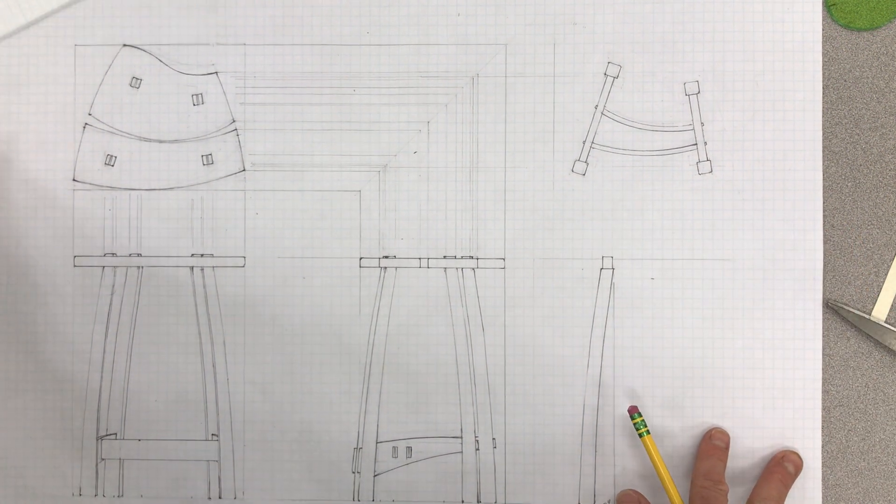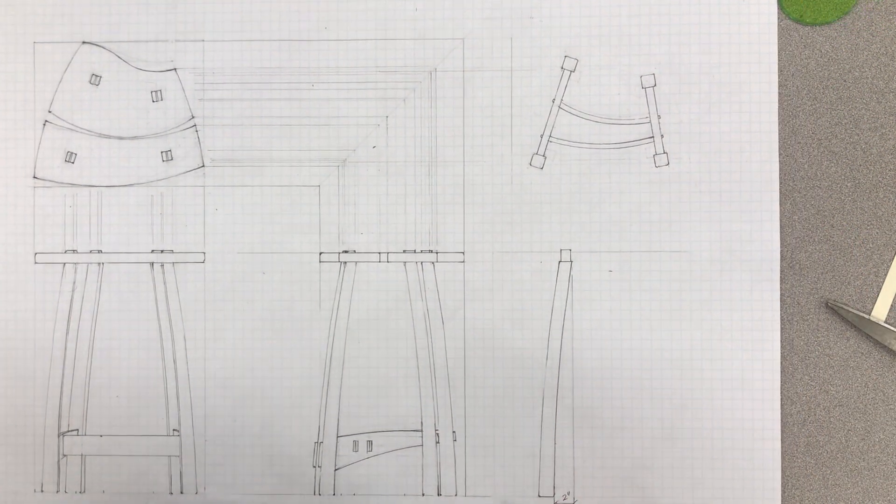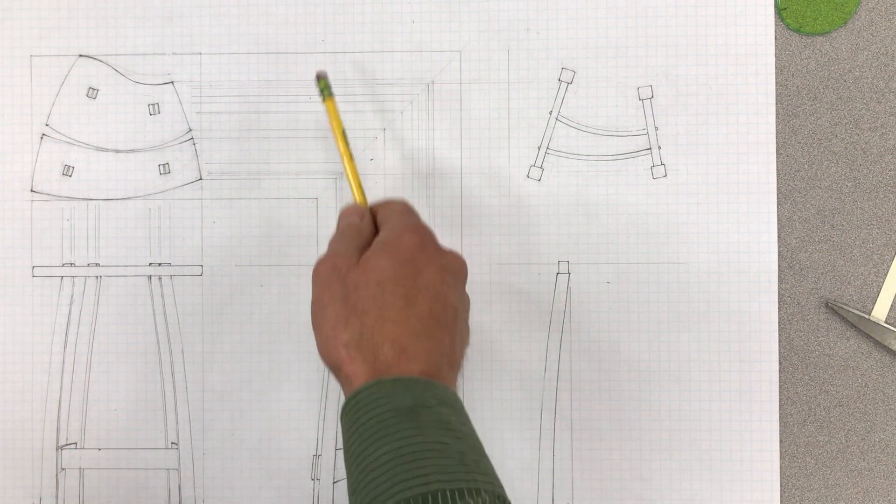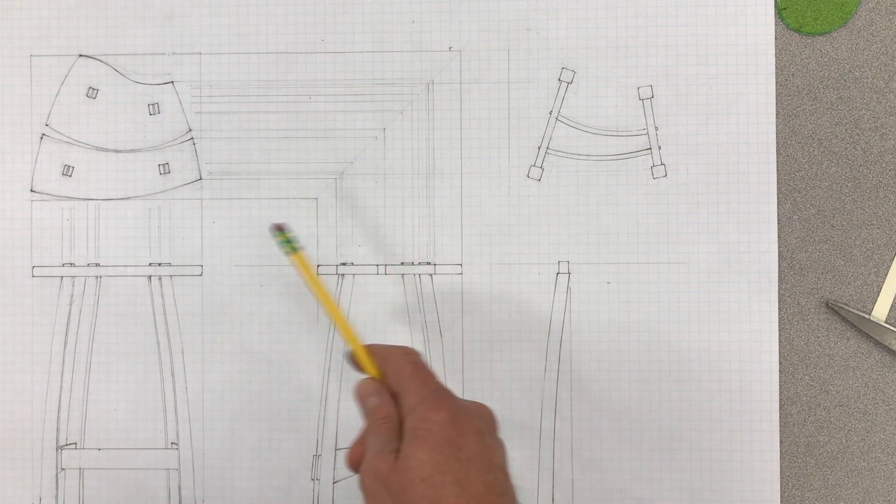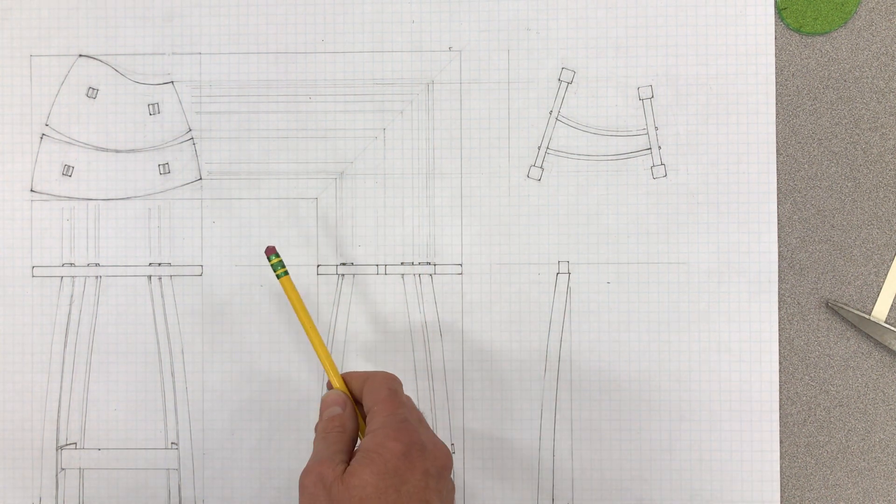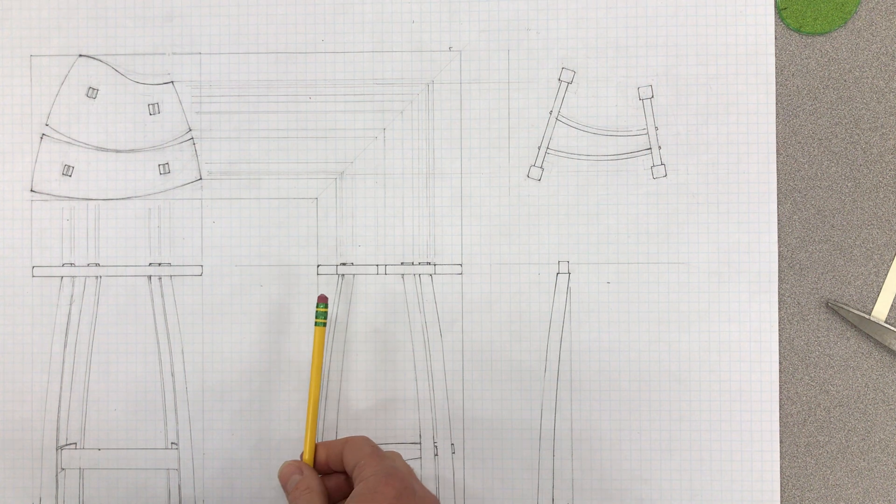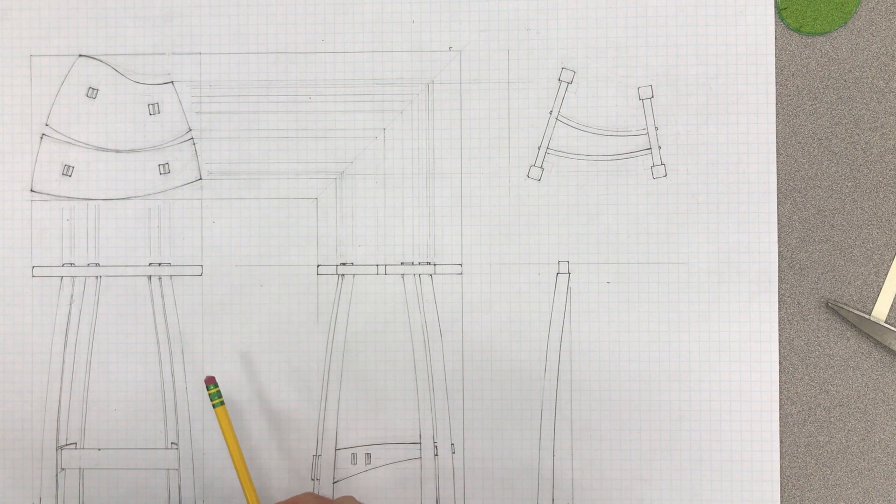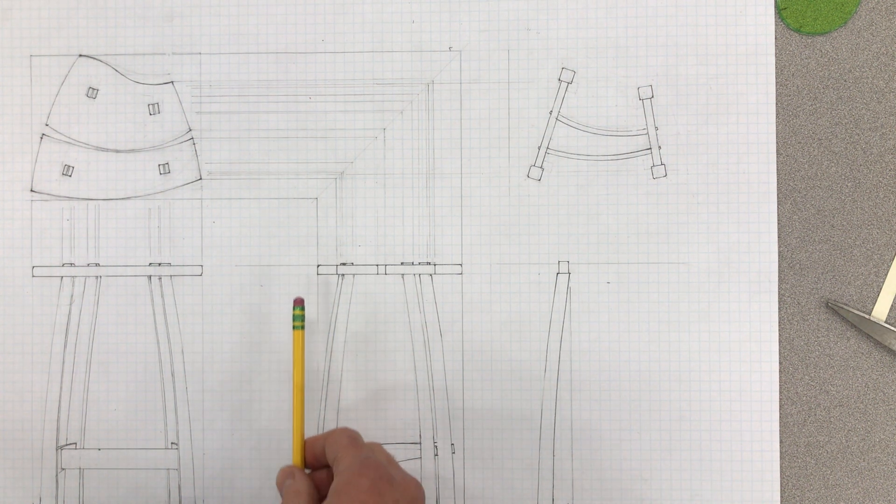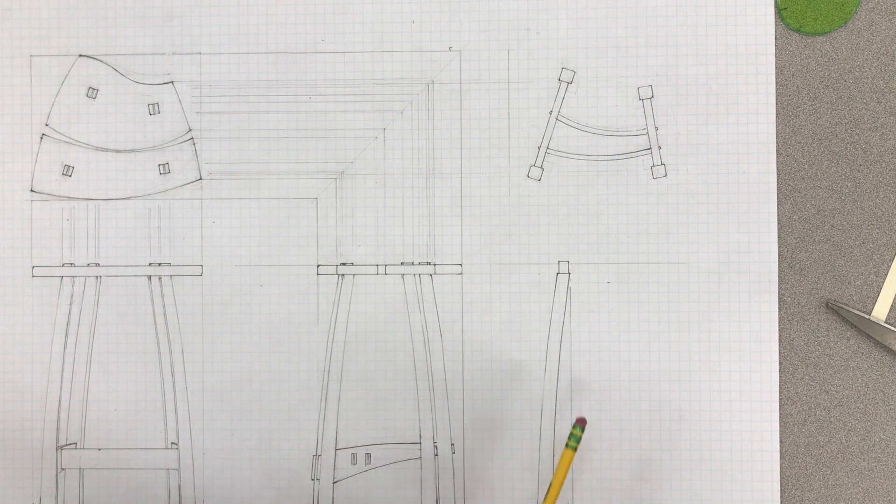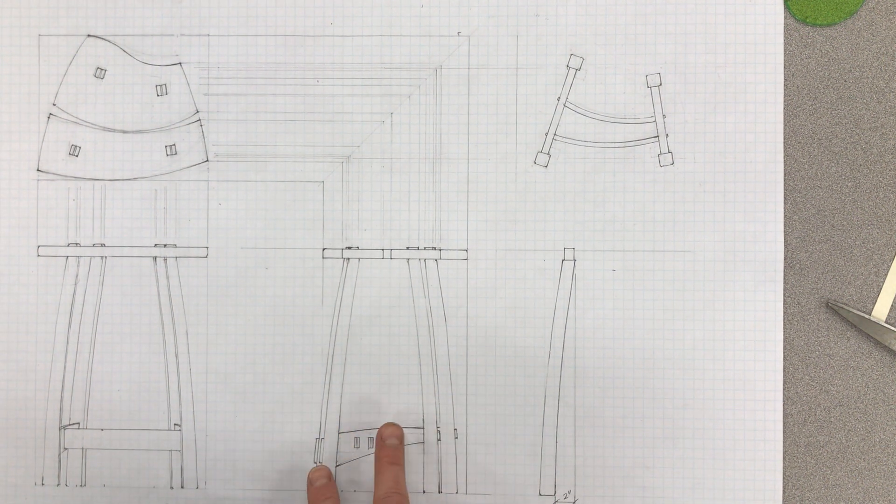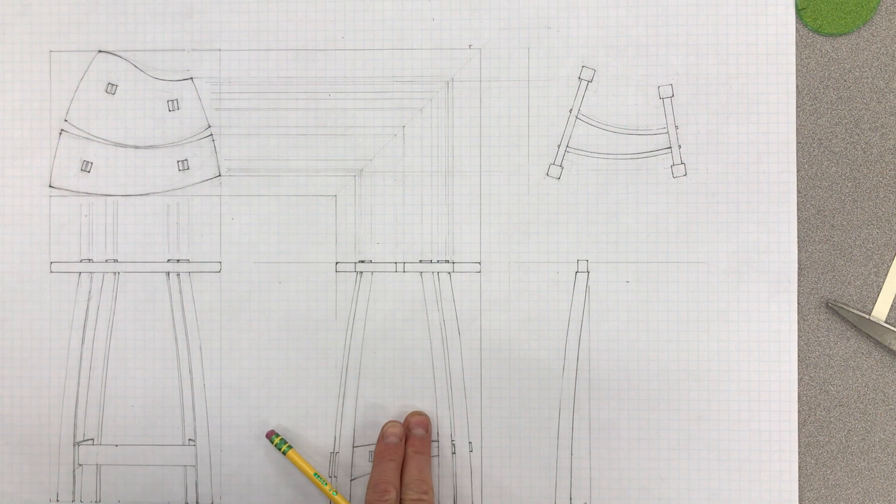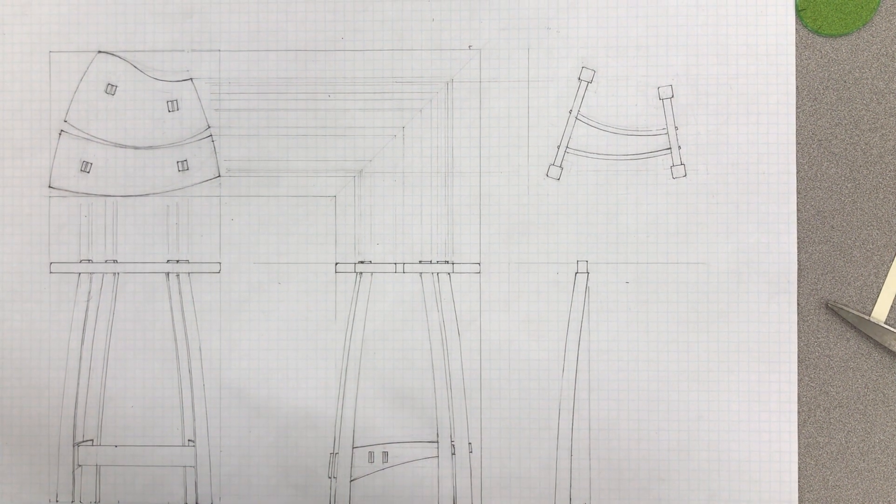What do I have to do yet? I have to erase some of my construction lines—I suppose I don't have to do that, but I don't want to confuse the viewer too much. I need to put dimensions on here and dimension lines, and then label the drawings, and then I'll be done. I'll see you next time.